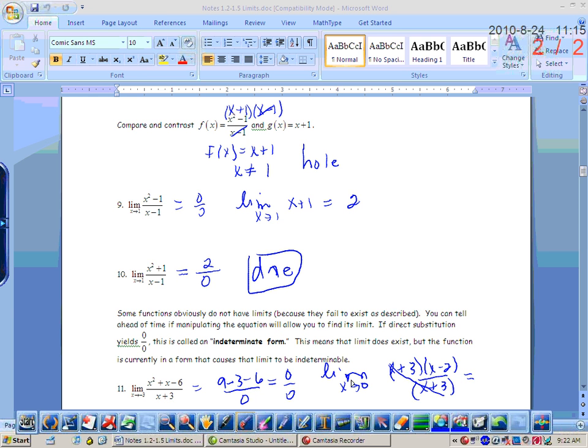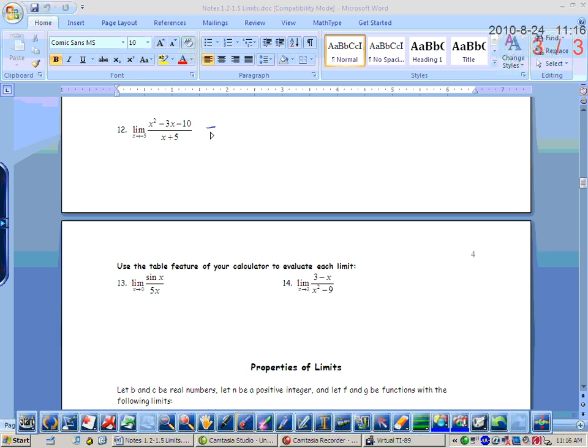Okay, so the x plus 3s cancel. So when we plug in a negative 3, we get negative 5. Okay, look at number 12. Try that one on your own. You definitely get 0 on the bottom when you use direct substitution, but the big question is, did you get 0 on the top? You get 30 over 0, which means the limit does not exist.